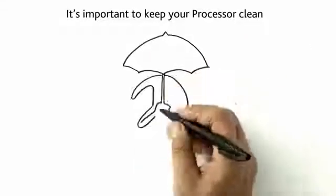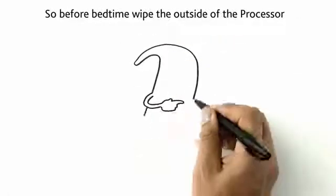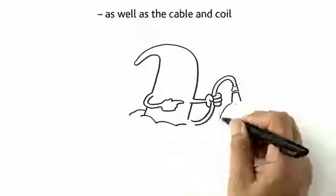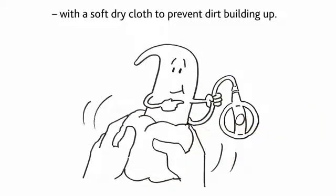It's important to keep your processor clean and free from moisture on the inside. So before bedtime, wipe the outside of the processor, as well as the cable and coil, with a soft dry cloth to prevent dirt building up.